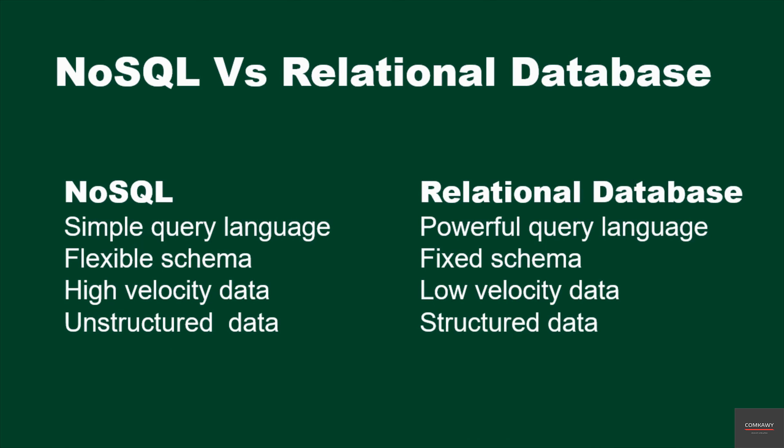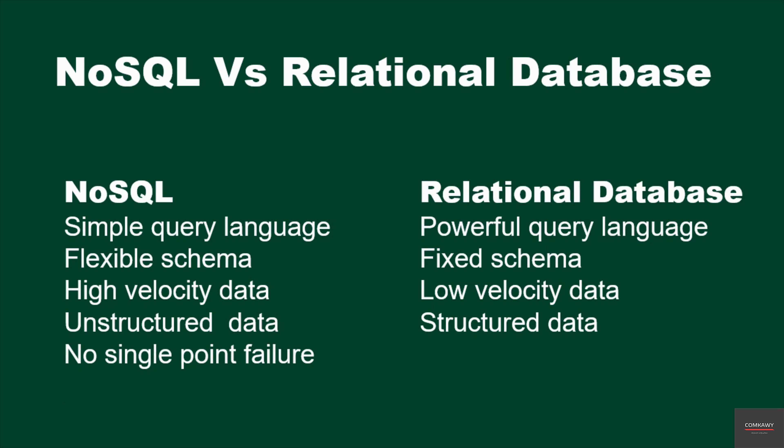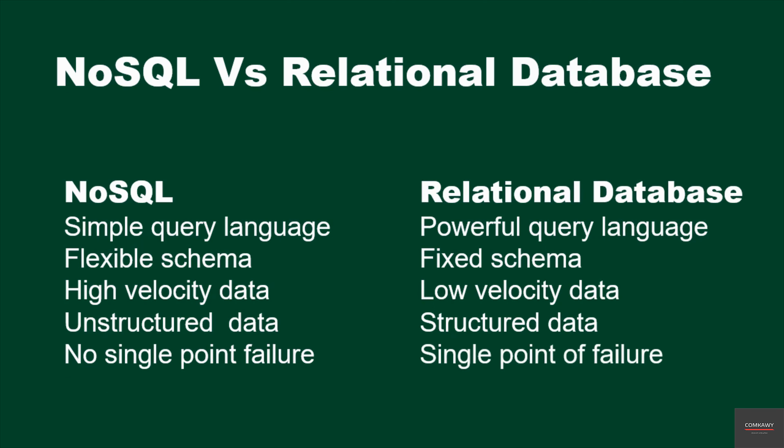With a NoSQL database, there is no single point of failure because it is decentralized, whereas in a relational database there is a single point of failure due to its centralized nature.